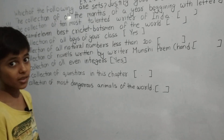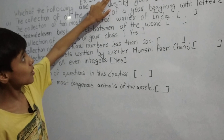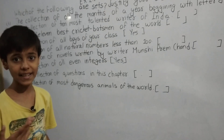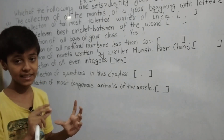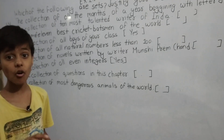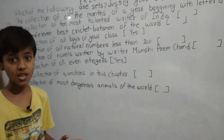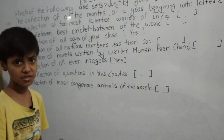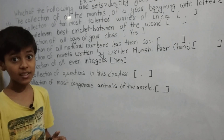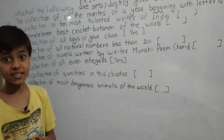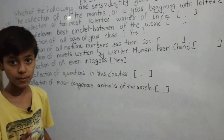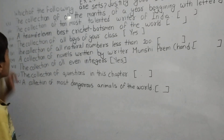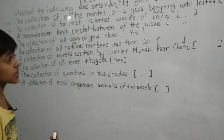Before solving Question 1, let me tell you what a set is. A set is any collection of anything — any objects or terms — where the elements present in that collection are well defined. Not all collections are sets. Whichever collection contains well-defined terms, that whole collection becomes a set.